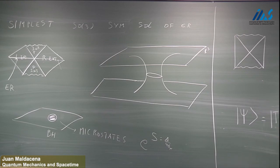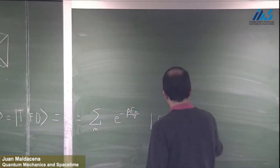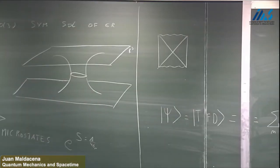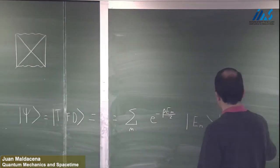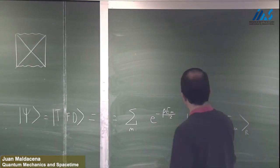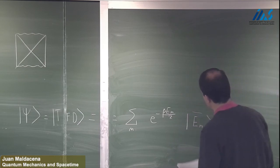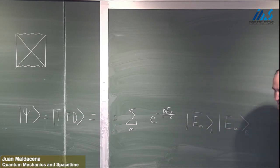The thermofield double state is equal to a sum over all microstates of e to the minus beta times the energy of the microstate divided by 2, times the microstate in the right Hilbert space tensored with the microstate for the theory on the left — which is really the CPT conjugate of whatever state we get on the right.